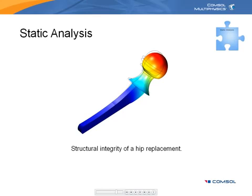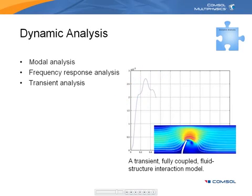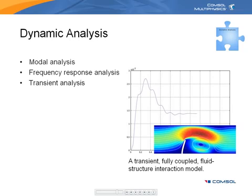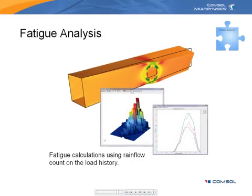Most structural mechanics models deal with bodies in equilibrium — such analyses are called static. Dynamic analysis, where loads vary with time, encompasses the analysis of modal or natural frequencies, frequency response, and transient response. At longer time scales, many structural components fail after repeated loading and unloading, despite the magnitude of these loads occurring well below the ultimate strength of the material. This phenomenon is called fatigue, and by applying methods of fatigue analysis, you can determine the likelihood of failure of such structures.